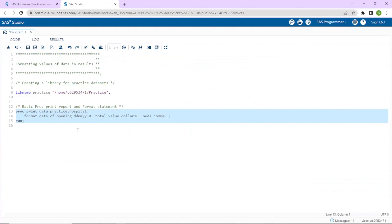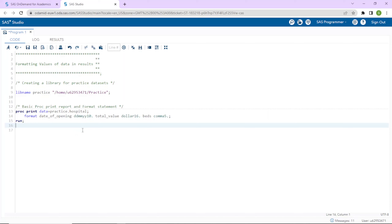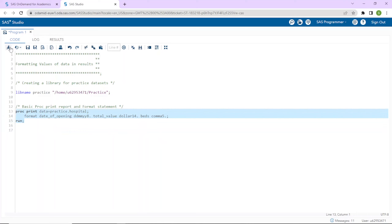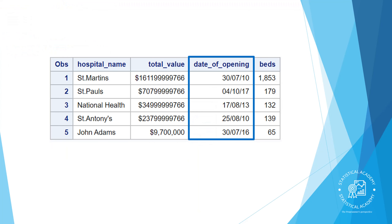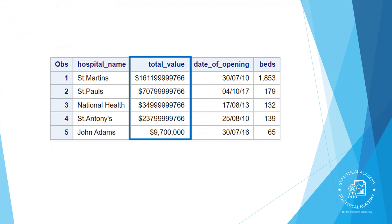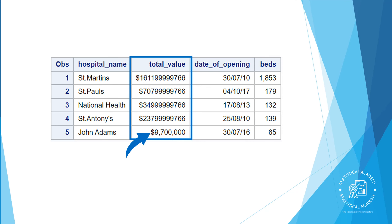I'm going to go back to the code tab to show you what happens if we change the widths of these formats. I'll change the DDMMYY to 8, DOLLAR to 14, and let's see what happens when I run this program. Notice that date of opening now has a two-digit year instead of four. For total value, on the larger numbers the commas have been removed; the dollar sign is still there. For smaller values, the commas are included because a width of 14 was sufficient to include all digits, commas, and the dollar sign.